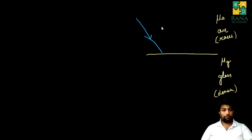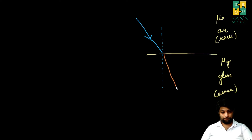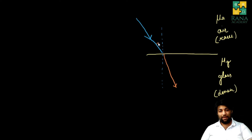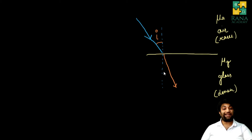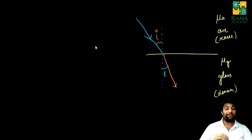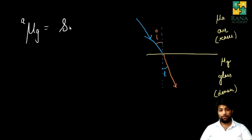If a ray of light is traveling from rarer to denser medium, we know that it will bend towards the normal. The angle made by the incident ray with the normal is known as the angle of incidence, and the angle made by the refracted ray with the normal is known as the angle of refraction. Now according to Snell's law, if a ray of light is traveling from air to glass, then the refractive index of glass with respect to air can be written as sine of i upon sine of r.